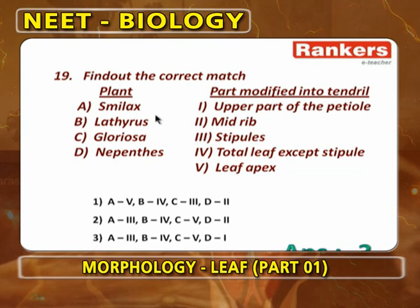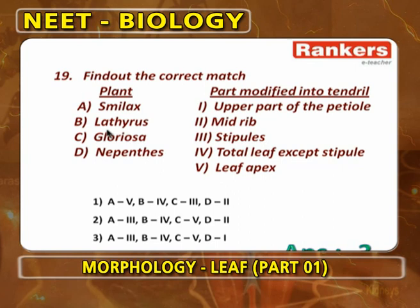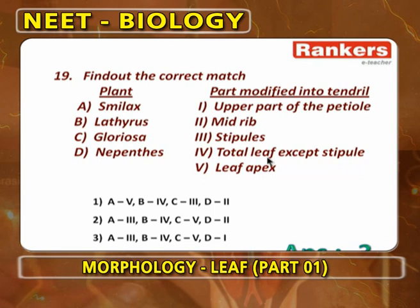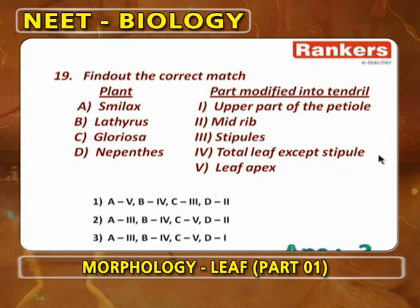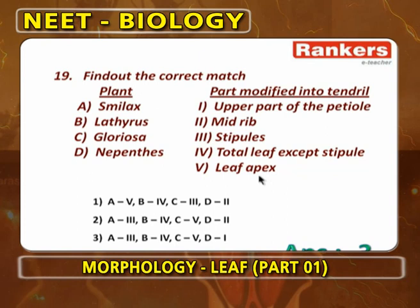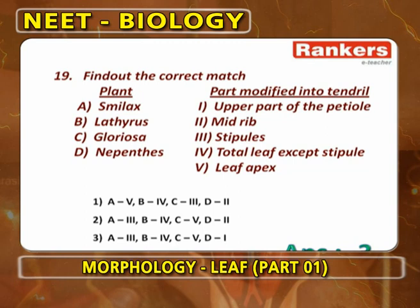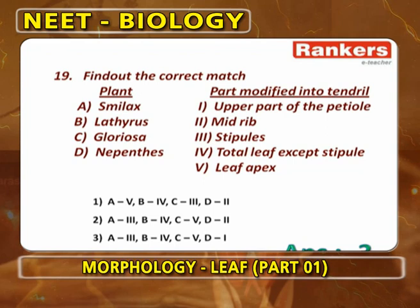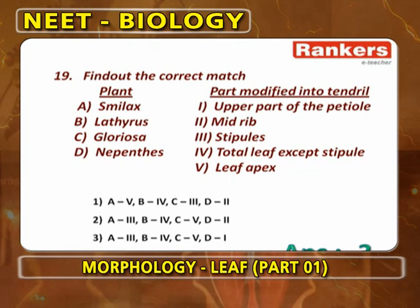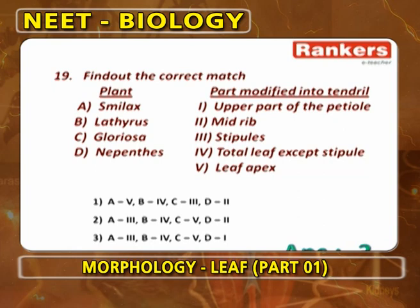Matching tendril modifications: Smilax — stipules modified into tendrils (A3). Lathyrus — total leaf except stipules modified into tendrils; stipules are broad expanded leaf-like and perform photosynthesis (B4). Gloriosa — leaf apex modified into tendril (C5). Nepenthes — upper part of petiole modified into tendril (D1). So answer is A3, B4, C5, D1.